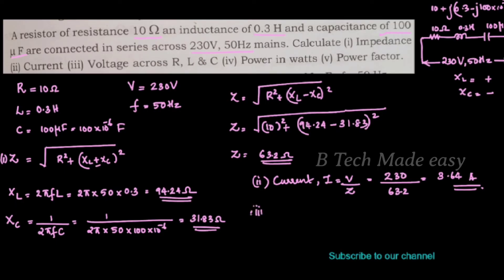The third question is to find the voltage across R. Voltage across R, that is VR, is equal to I into R. I is 3.64 ampere and R is 10 ohm. So VR is equal to 36.4 volt.